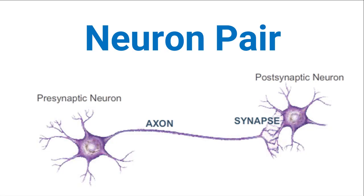The fundamental unit of a neural network is the neuron pair. To understand how signals are transmitted through the neural network, we must first understand how a signal is transmitted from one neuron to another.